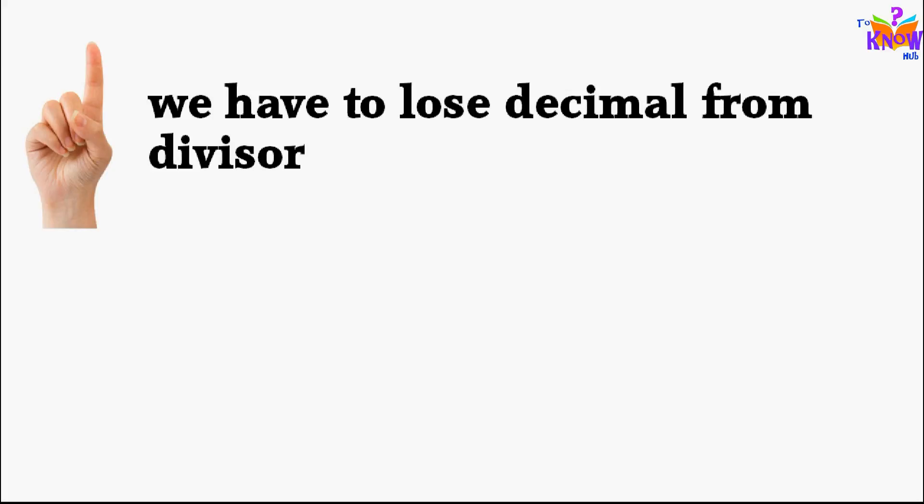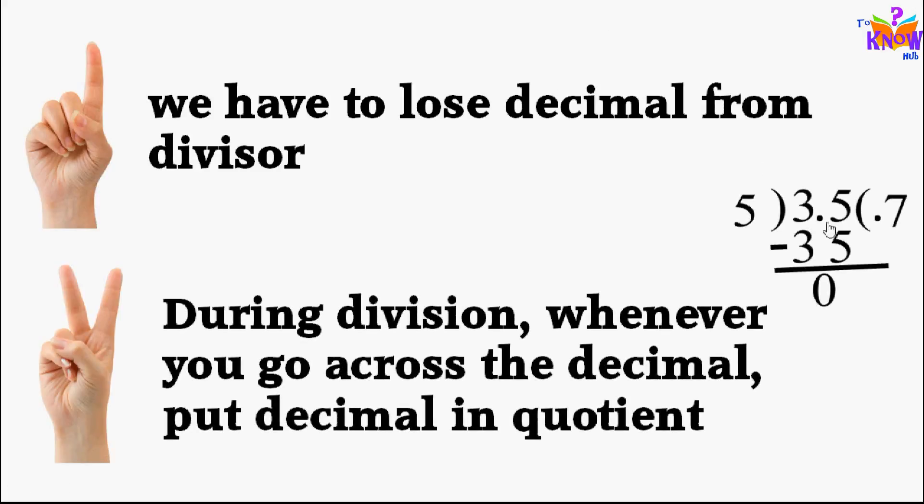That means if you are moving decimal point by three spaces in denominator, you have to do the same in numerator. During division, when you go across the decimal, put decimal point in the quotient. And practice is the key to perfection. No tricks, no shortcut. So practice.